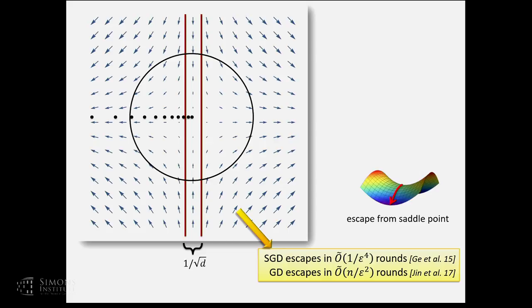This motivates the idea of random perturbation: if we perturb the point inside a unit ball in d-dimensional space, by concentration theorems with very high chance we won't land inside the thin belt near the central line. After perturbation, our point is either left or right, giving a lower bound on distance from the central line, allowing us to prove a rate of escaping from saddle points. Researchers have shown that SGD plus random perturbation can escape saddle points in a bounded number of rounds.